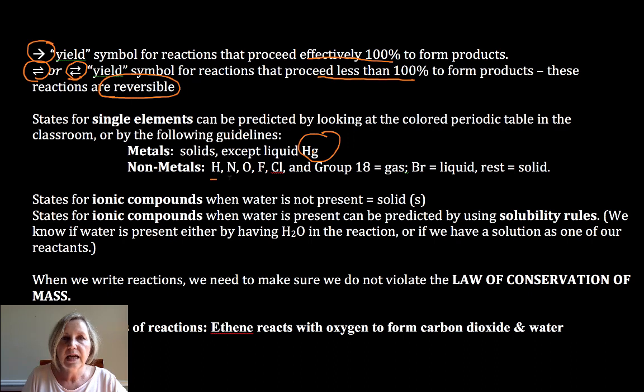For the non-metals, hydrogen, nitrogen, oxygen, fluorine, chlorine, those are all gases along with, of course, our noble or inert gases. Bromine is a liquid. Everything else is a solid.